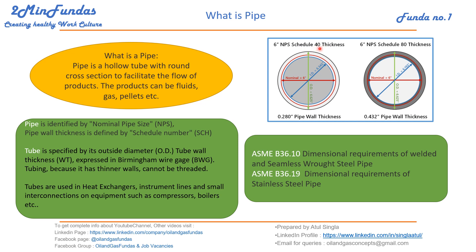We have Schedule 40 and Schedule 80. The outer diameter will remain the same, while the inner diameter keeps changing with the increase in thickness. For tube, it is always defined by its outside diameter, and thickness can be defined by BWG (Birmingham Wire Gauge).